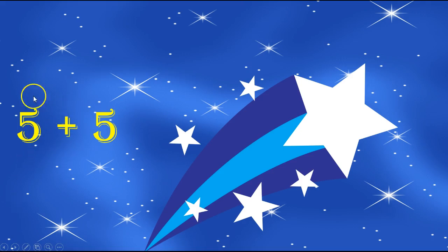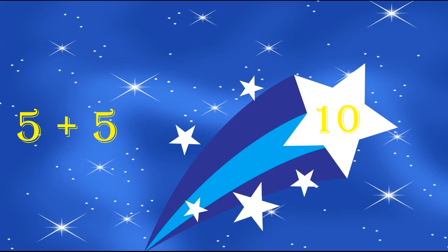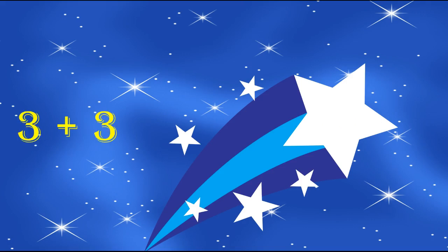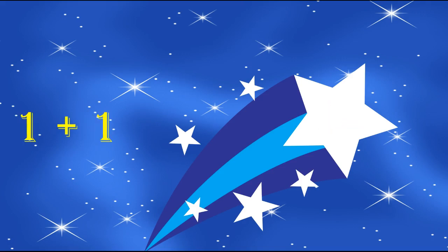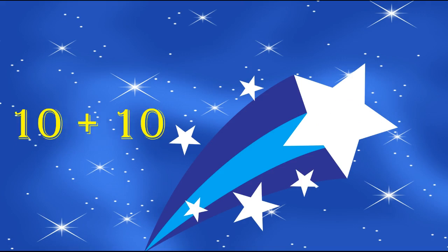A double is when we have two of the same numbers added together. For example, 5 plus 5. Did you say 10? Good job! How about 4 plus 4? Did you say 8? Excellent job! How about 3 plus 3? 6 — good job! How about 6 plus 6? 12 — good job! How about 1 plus 1? 2 — excellent job!